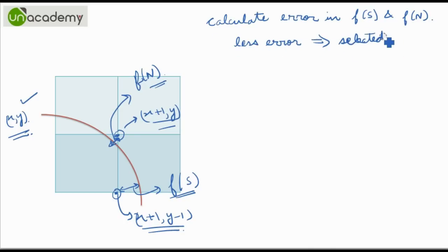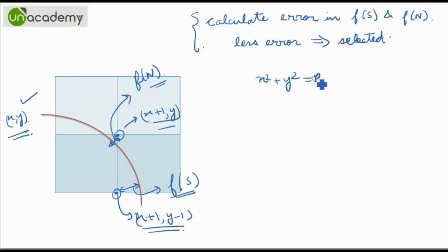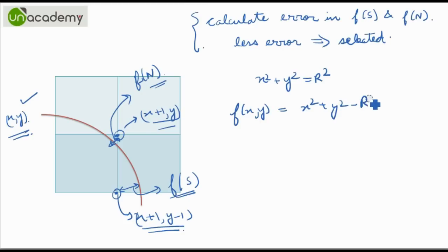So let us see how this algorithm is derived. We have the equation of the circle centered at origin with radius r. We have the function f(x, y) as x squared plus y squared minus r squared. Now we will calculate the values of f of N and f of S.